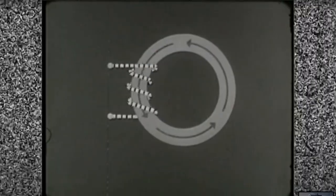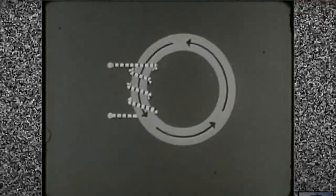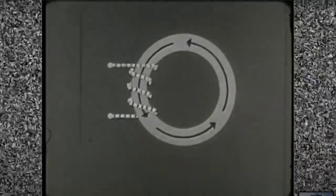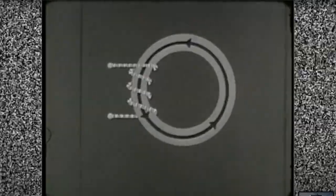Because the core is made of highly permeable material it forms a path for the magnetic lines of force. Because it is ring-shaped the path it forms is a closed loop.